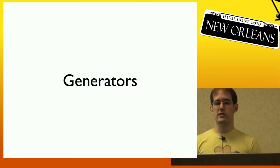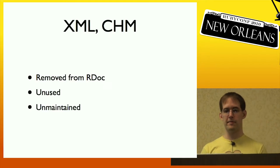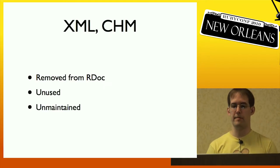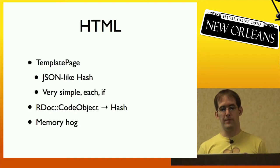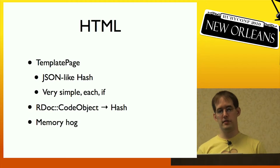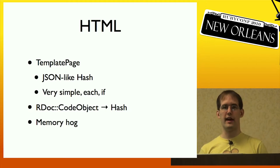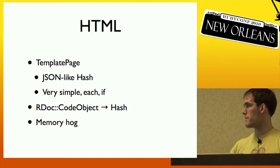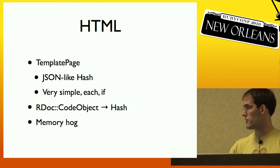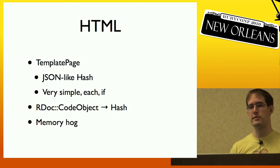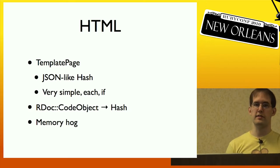None of the original RDoc generators were maintained. The XML and CHM generators have been removed from RDoc because they were unused and unmaintained. The original HTML generator used a class called TemplatePage to generate output. This consumed a JSON-like hash, which was very simple and used only 'each' and 'if' as constructs. It would also convert the RDoc code object tree into a flat nested hash, which lost all the richness of the Ruby objects.